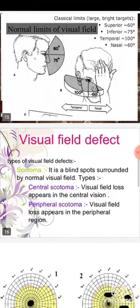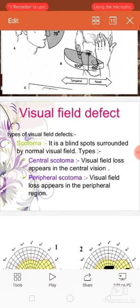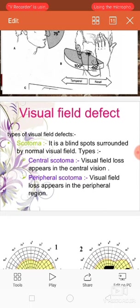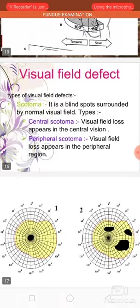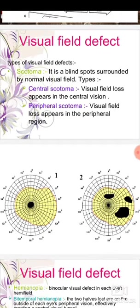The types of visual field defects include scotoma, which is a blind spot surrounded by a normal visual field. Types of scotoma are central scotoma, where visual field loss appears in the central vision, and peripheral scotoma, where the visual field loss appears in the peripheral region. Images show a black spot in the center for central scotoma and black spots in the periphery for peripheral scotoma.